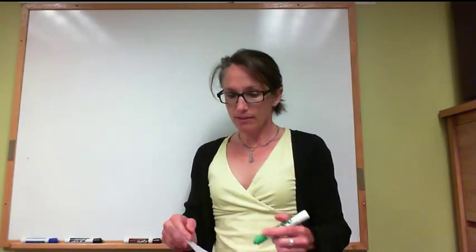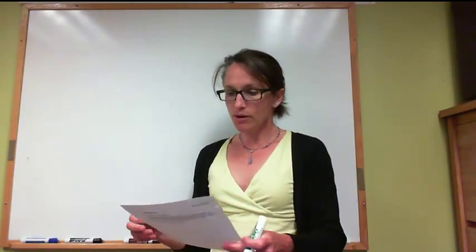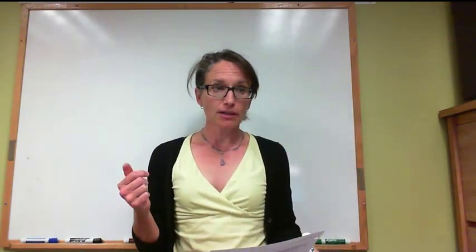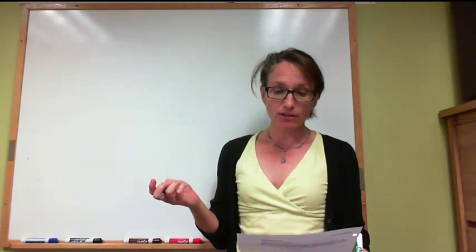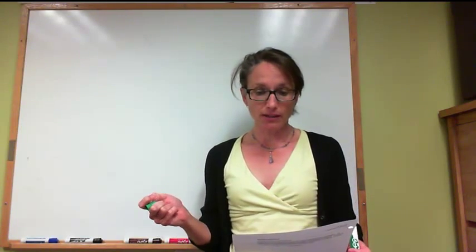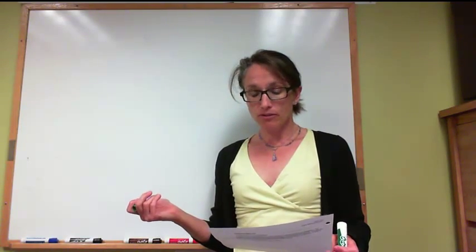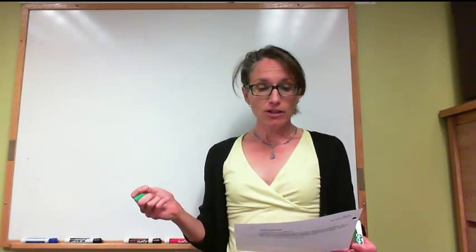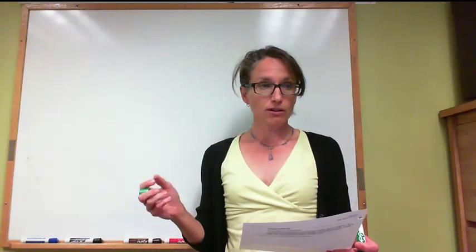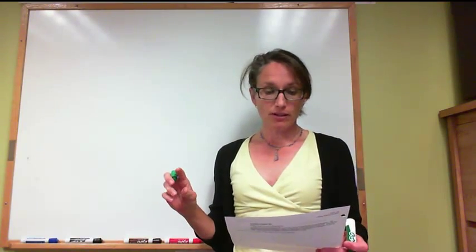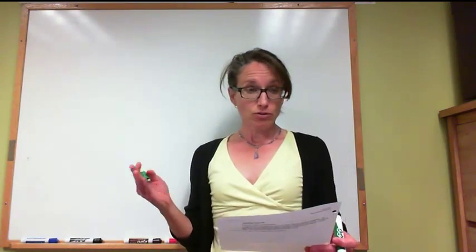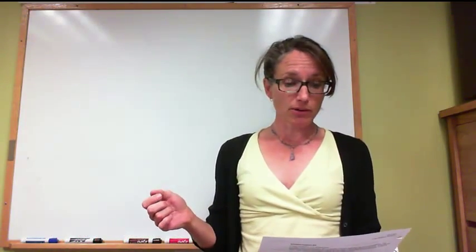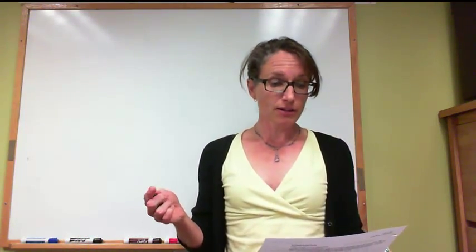This is our first water balance example problem — a water balance in a lake. For a given month, a 300-acre lake has a 15 cubic feet per second inflow, 13 cubic feet per second outflow, and a total storage increase of 16 acre feet. A USGS gauge next to the lake recorded 1.3 inches of precipitation for the month. Assuming infiltration loss is insignificant, we want to determine the evaporation loss in inches over the lake for the month.